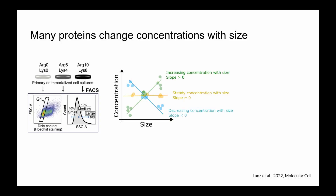To do this, two postdocs in the lab took human primary or immortalized human cells, sorted them in G1 phase into three different sizes using FACS — small, medium, and large. They were then able to plot proteins detected through mass spectrometry at these different sizes and run a linear regression to see how protein concentration changes with cell size. This slope metric is what I'll be discussing throughout the presentation.